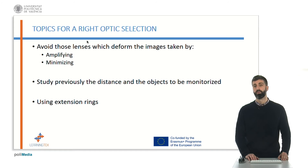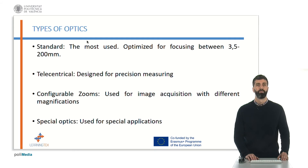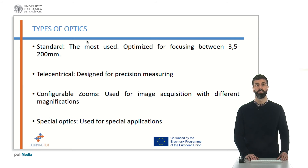It is also important to use extension rings, because they allow a wide measuring range with a reduced number of lenses. The most commonly used optics are standard optics, which are optimized for focusing between 3.5 and 200 mm. The modulation transfer function is normally between 70 and 90 line pairs per mm, with low distortion. Telecentric optics are used for precision measuring applications in which distortion is eliminated and light strikes perpendicularly to the optic.